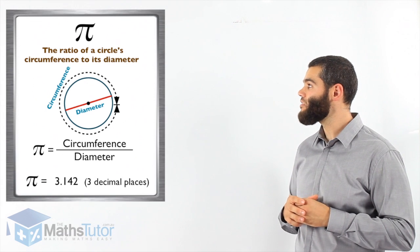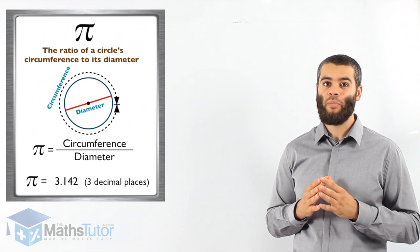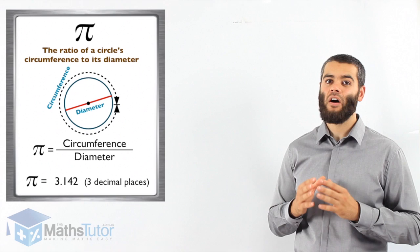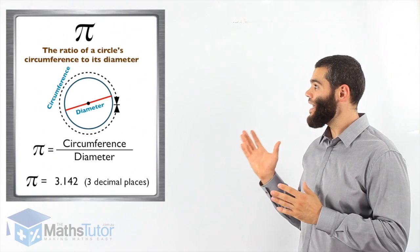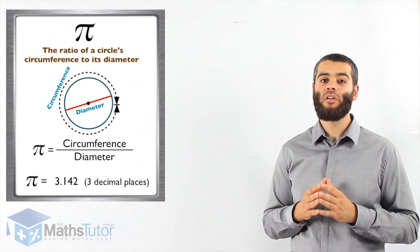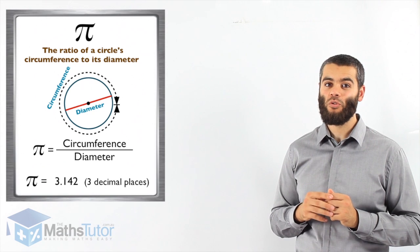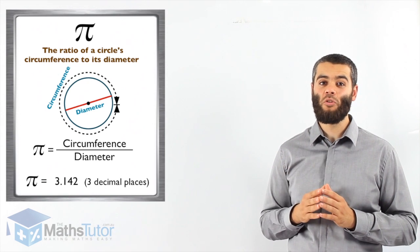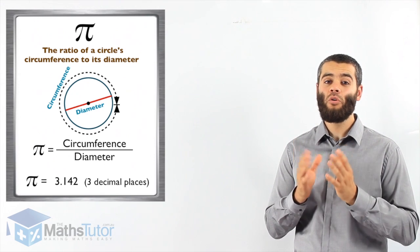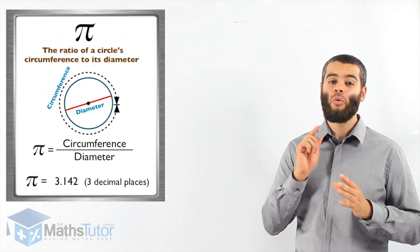So basically, to work out π, it's the circumference of the circle divided by the diameter. Now we're going to use this symbol π, and it represents 3.142. We're going to use it whenever working with circles, circumference of circles, area of circles, when working with cones, spheres, cylinders, we're always going to be using π. Remember π very well.